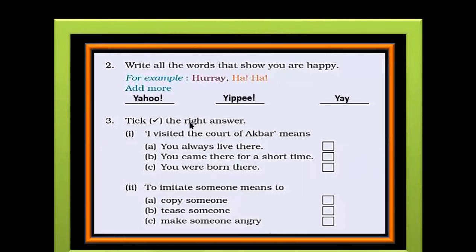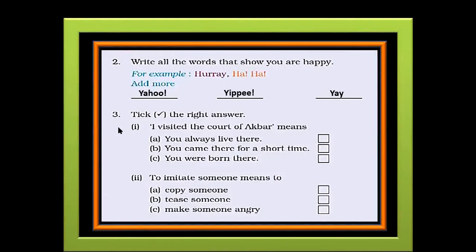Moving on to the next exercise, tick the right answer. In this exercise, there are two multiple choice questions. The first question is: I visited the court of Akbar means — the three options are: you always live there; you came there for a short time; you were born there. And the correct answer is: you came there for a short time. The second one: to imitate someone means to — options are: copy someone; tease someone; make someone angry. And we all know that to imitate someone means to copy someone.